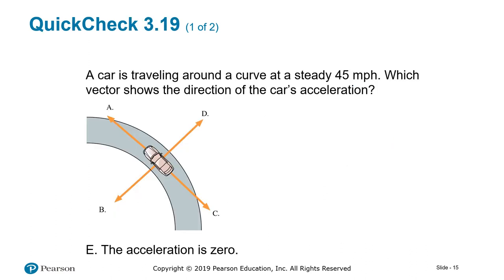The car is traveling around a curve at a steady 45 miles per hour. Which vector shows the direction of the car's acceleration? Well, here's your curve. And acceleration in circular motion is what? Centripetal, so it's center-seeking. So which vector shows the direction of the car's acceleration? If you said B, you are correct.